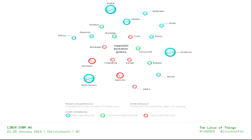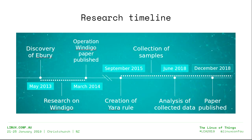We decided to draw a galaxy based on Star Wars planets. The color represents the sophistication of the code, the planet circumference represents how many hashes of the same family we have — the bigger the planet, the more hashes — and the further the planet is, the older its activity. This is just a timeline: we released the paper in 2014, created the YARA rules in 2015, and in 2018 we decided to analyze all this collected data and published the paper in December.